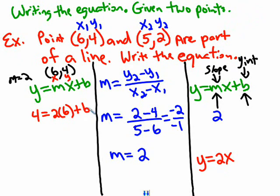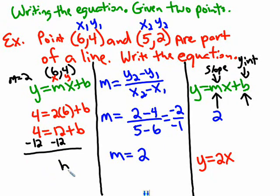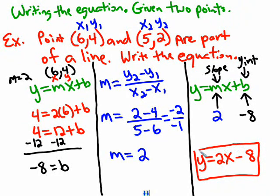So 4 equals 12 plus b. And it's true, in text they don't use the word 'plug in,' they use the word 'substitute,' but we can remember that. So b equals negative 8. If we know that b equals negative 8, then that completes my puzzle - the answer, which is the equation of the line that passes through the two points: y equals 2x minus 8. And that is how we write equations of the line given two points.